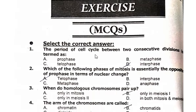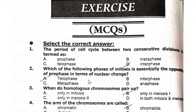This is the first one that you have in the book. The period of cell cycle between two consecutive divisions is termed as interphase. Which of the following phases of mitosis is essentially the opposite of prophase in terms of nuclear change? That is telophase.